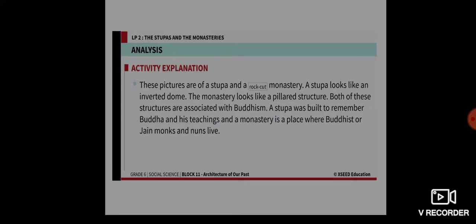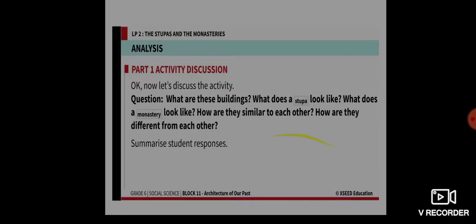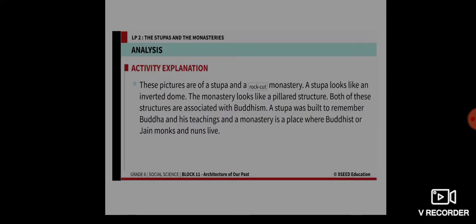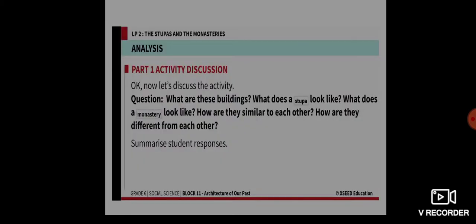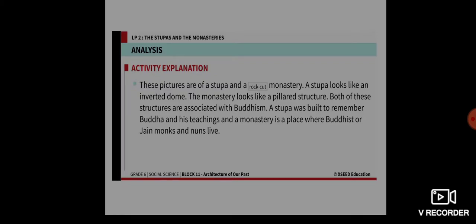These pictures are of a stupa and a rock-cut monastery. A stupa looks like an inverted dome, and the monastery looks like a pillar structure — a rock-cut pillar structure. Both of these structures are associated with Buddhism. A stupa was built mainly to remember Buddha and his teachings, and a monastery is a place where Buddhist and Jain monks and nuns live.